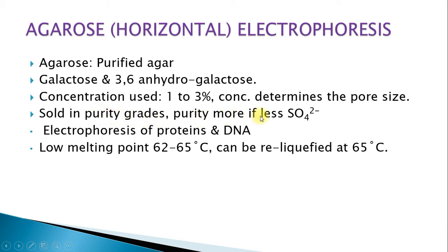Agarose can be used for electrophoresis of proteins and DNA. A positive feature is its low melting point of 62 to 65 degrees Celsius, allowing it to be reliqueified at 65 degrees Celsius. The gel is prepared by dissolving dry agarose in an aqueous buffer solution, boiling it until clear, then pouring it and allowing it to cool at room temperature to form a rigid gel.